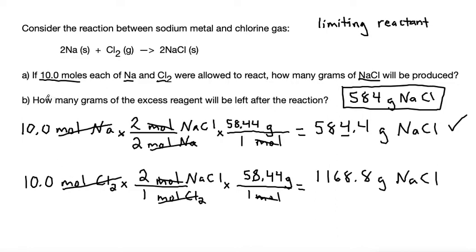Then for part B, it's asking how many grams of the excess reagent will be left after the reaction. Well, since we chose the sodium is limiting because that one is the one that produces less product, that means that the chlorine is excess. There's going to be some leftover of the chlorine. So if we start with what was produced by the limiting reactant, which is the 584.4 grams of NaCl, then we can back calculate how much Cl2 that we needed to use to do that conversion.